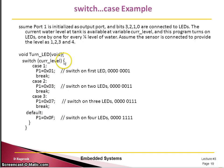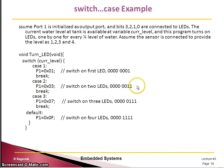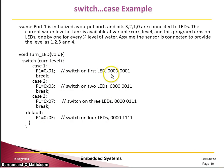Inside the switch block, write case 1: if the current level value is 1, we assign 0x01 — in binary, four zeros followed by 0001 — to the port, then break. If the level is 2, we want two LEDs on, so the binary value is 0011, which is 0x03. For three LEDs, it is 0111, which is 0x07. If nothing matches any case, the default case handles it. This is a simplified example; in practice you must address all 8 bits properly.